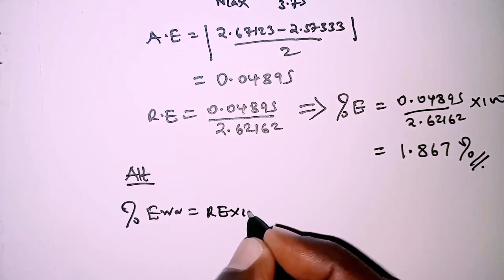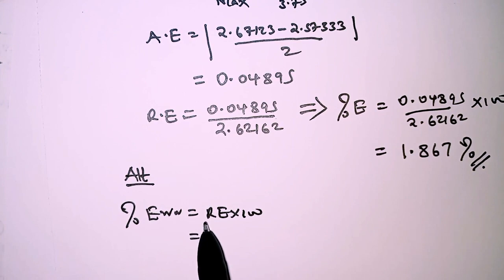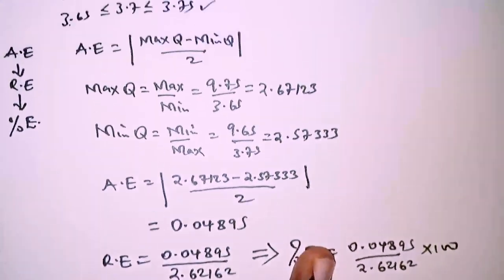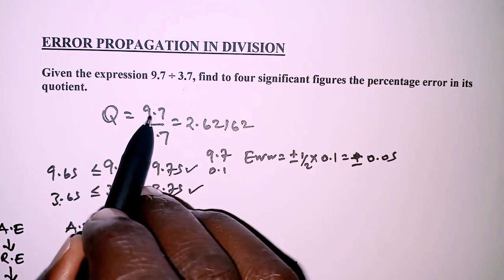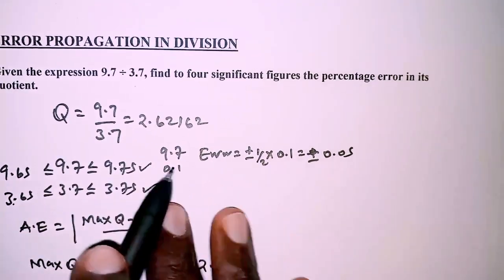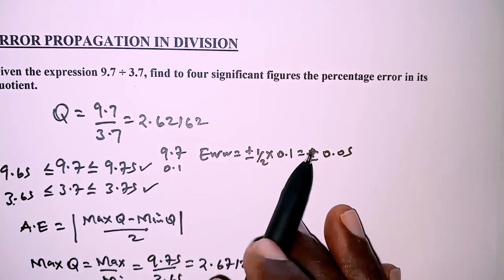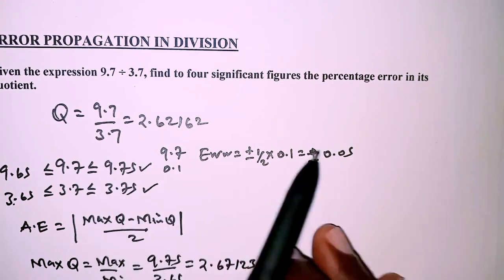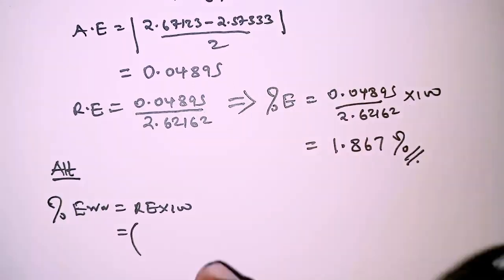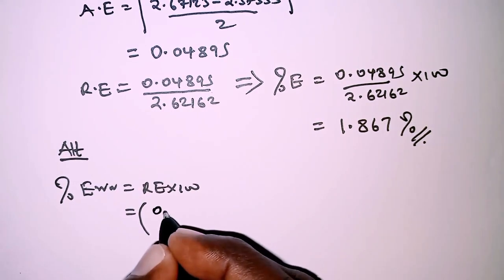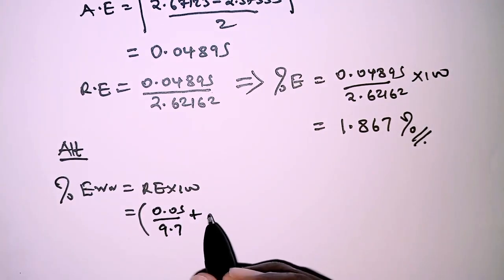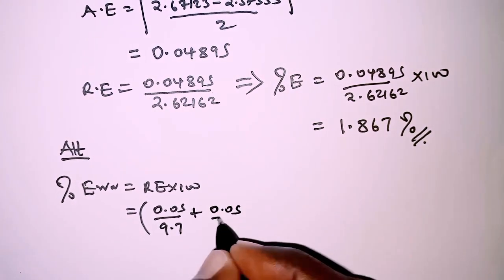An alternative way of getting the relative error for the quotient is by finding the relative error for each measurement, that is the relative error for 9.7 and the relative error for 3.7, and then summing them up. The error in 9.7 is plus or minus 0.05, so the relative error for 9.7 is 0.05 over 9.7, plus the relative error for 3.7, which is 0.05 over 3.7.